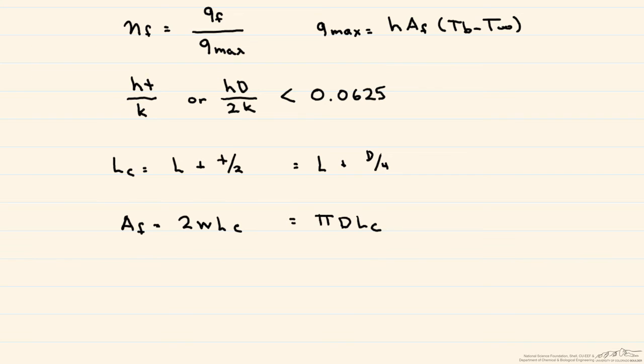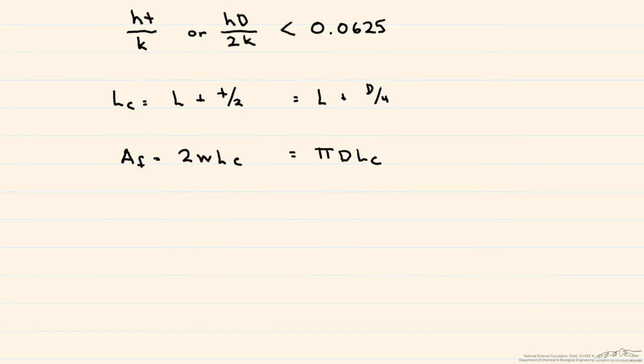So what is the efficiency of an adiabatic tip? So the efficiency is equal to the hyperbolic tangent of this expression, which I'll define M times this corrected length. And that entire expression is divided by M times the corrected length. And our M is equal to 2 times the convected heat transfer coefficient divided by the thermal conductivity times the thickness of the fin to the one-half. Or, if it's a pin fin, it's equal to 4 times H divided by K times D, all raised to the one-half.